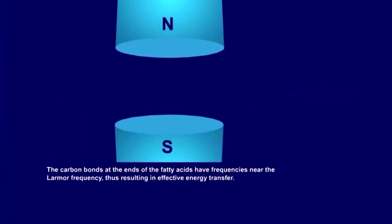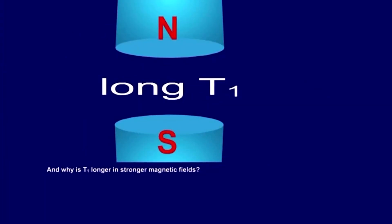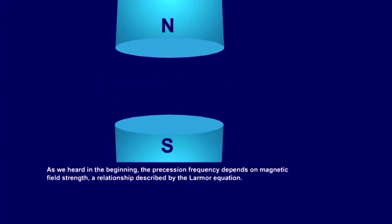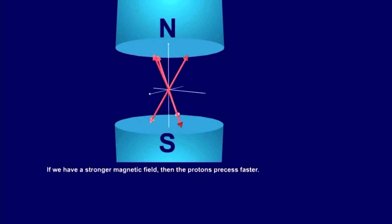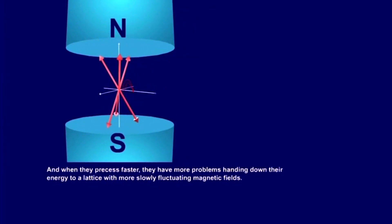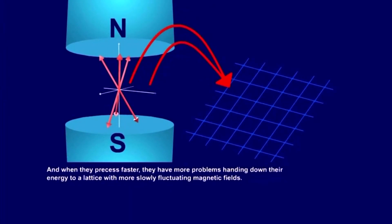And why is T1 longer in stronger magnetic fields? As we heard at the beginning, the precession frequency depends on magnetic field strength, a relationship described by the Larmor equation. If we have a stronger magnetic field, then the protons precess faster. And when they precess faster, they have more problems handing down their energy to a lattice with more slowly fluctuating magnetic fields.